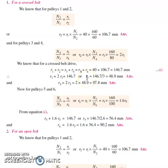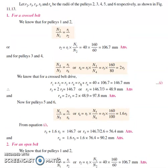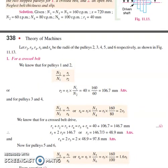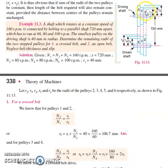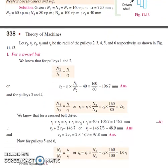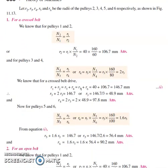This formula for the crossed belt drive lets us determine the different radii of the pulleys. From the diagram, pulley 1 connects to pulley 2, so r1 + r2 = r3 + r4 = r5 + r6. This is how the formula is derived — all pulleys connected by belts are related through this equation.